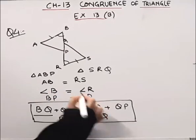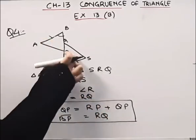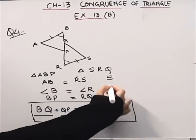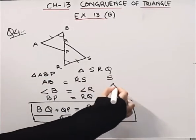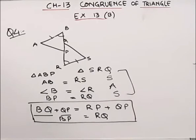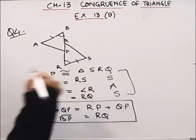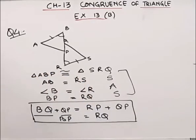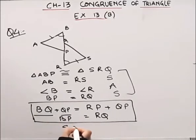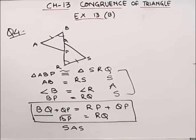If we apply side, angle, side to these two triangles, then these two triangles are congruent. We have applied the SAS criteria.